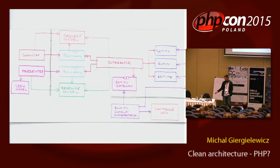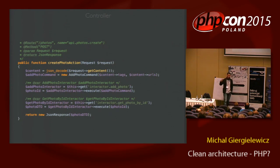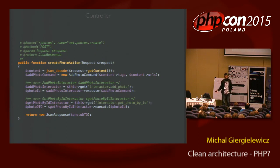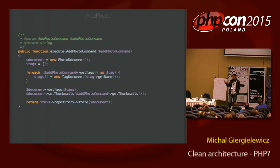In this architecture, you are forced to be SRP-compatible because your interactor can do only one thing. This is beneficial because you don't need to think about it — you get it out of the box. And I have two interactors: add photo and get photo by ID. Of course, they have in their constructor parameters — I inject the repository. And in the get by ID, I also inject the photo DTO factory. Now the controller: we have a controller with action create photo, it is a slash photo URL with POST and some JSON response.